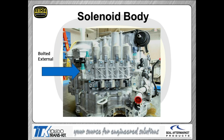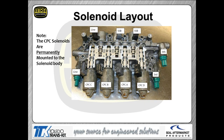Rotating the transmission onto its belly reveals the solenoid block. The four CPC solenoids on top look like missile silos. The regular shift solenoids are on the bottom, and the green devices are the pressure switches. A cutaway of the solenoid block shows the valve layout clearly. The CPC solenoids are permanently mounted — the other solenoids are replaceable, but if you lose a CPC solenoid, you have to buy that entire solenoid block assembly.